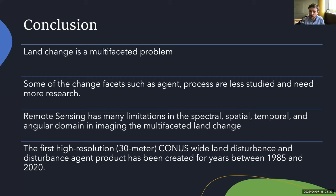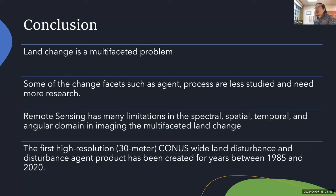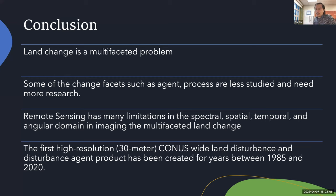What are the most important predictors or variables when trying to classify the change agents? Most of the time it's the during-change information — we call this the change vector — which is the model-predicted value versus the observed value when the change actually occurred. The land cover time series model coefficients before and after the change are also very important parameters.